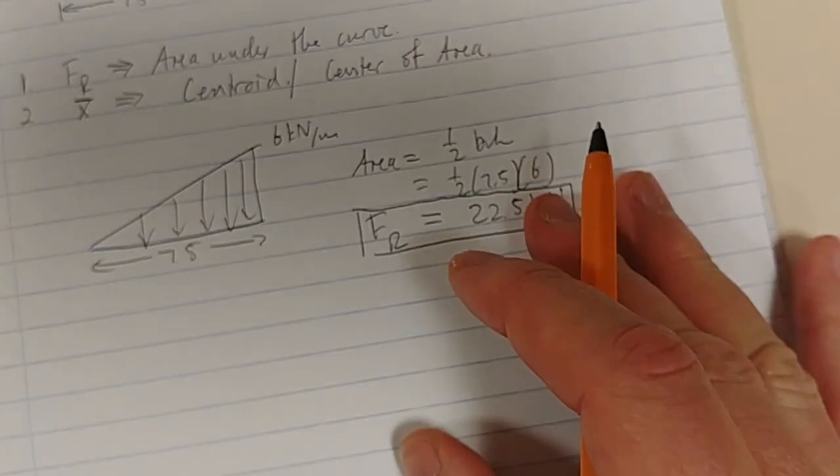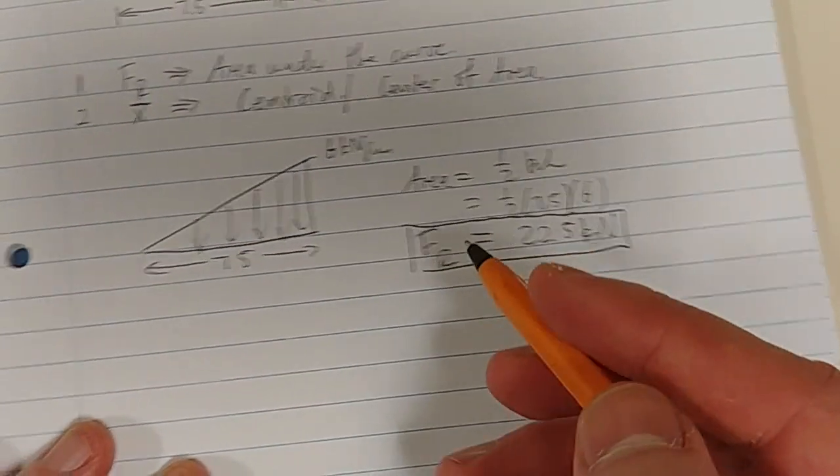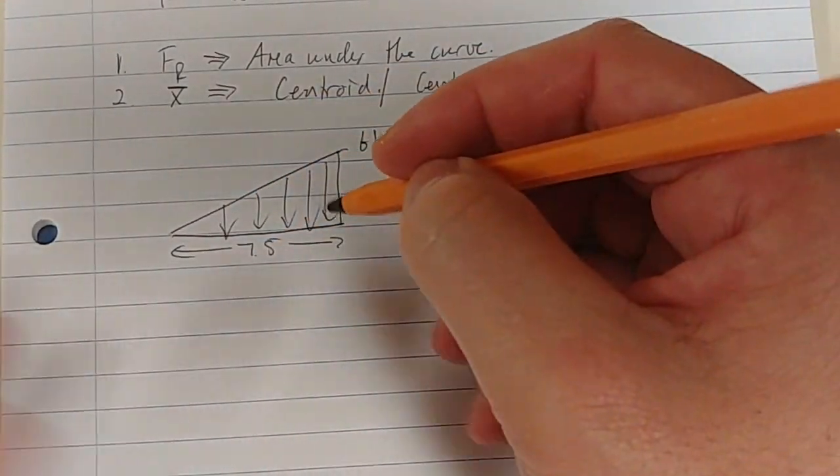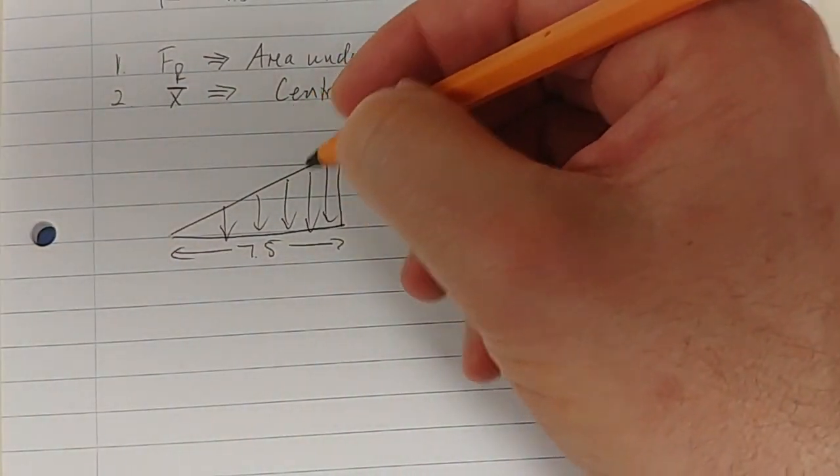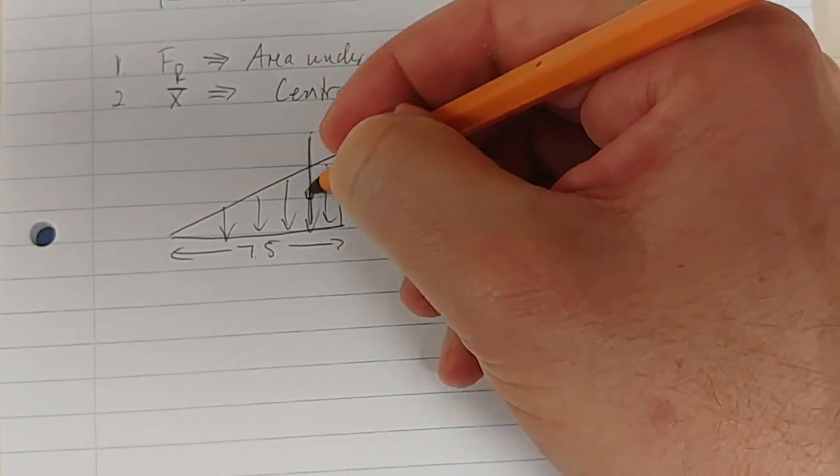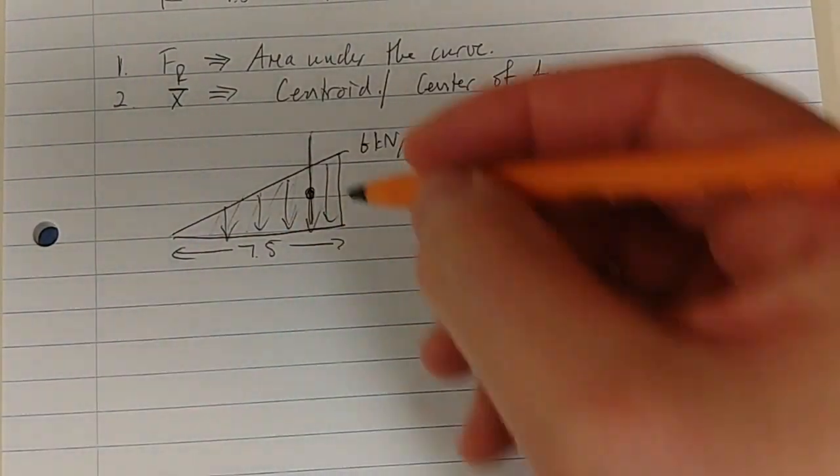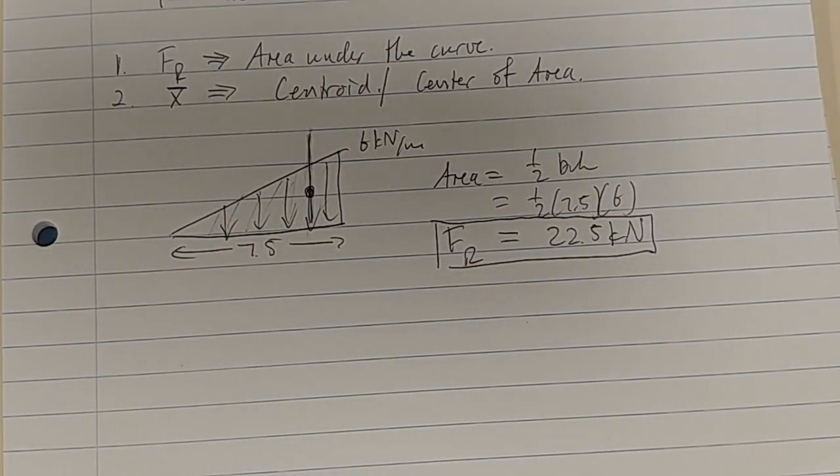Then the second thing we want to know is where does it act? Well, it acts through the centroid. What's your gut feeling about where the centroid should be? It should be towards this side, right, because the same amount of area should be on both sides of this line.